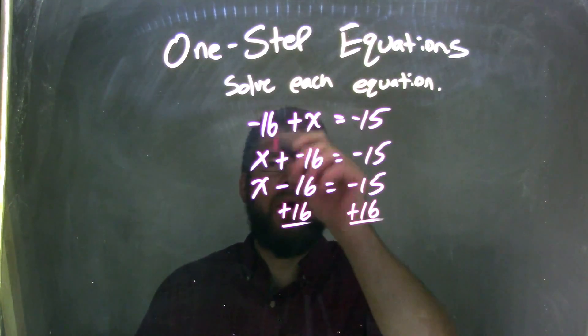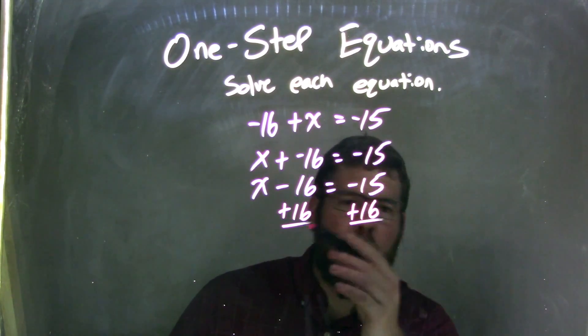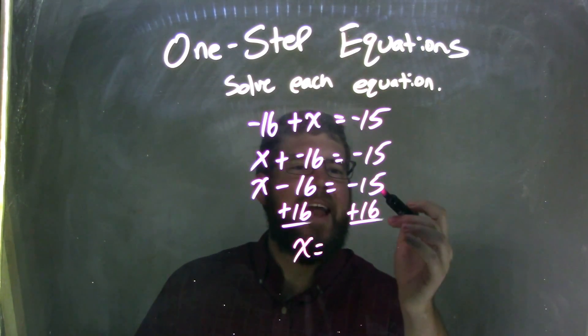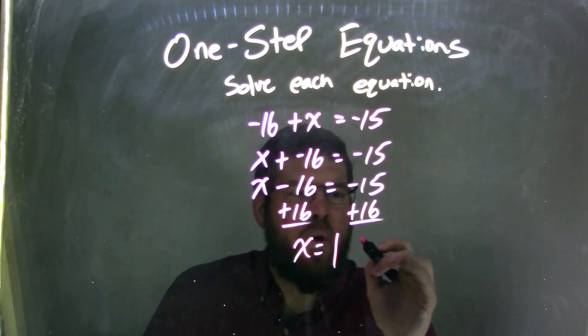Now, you don't have to do all these steps. A lot of people can recognize it from the beginning, but I wanted to write it out so you can see. So, we have x equals, well, negative 15 plus 16. Now, that's going to be a positive 1.